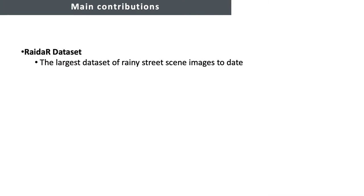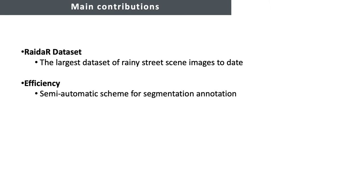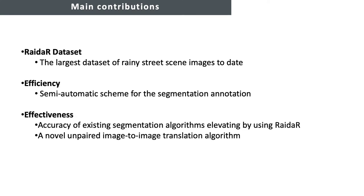The main contributions of this paper are as follows. First, we introduce the largest dataset of rainy street scene images to support research in self-driving. Then, we develop an efficient semi-automatic scheme for segmentation annotation. Finally, we demonstrate the effectiveness of our new dataset by showing how data augmentation with RADAR can elevate the accuracy of existing segmentation algorithms. We also present a novel unpaired image-to-image translation algorithm, based on a masked version of GAN Hopper, for adding and removing rain artifacts.